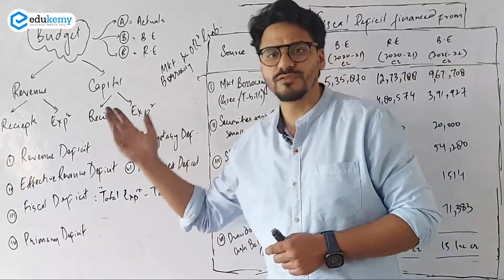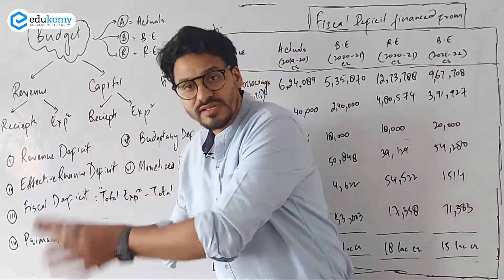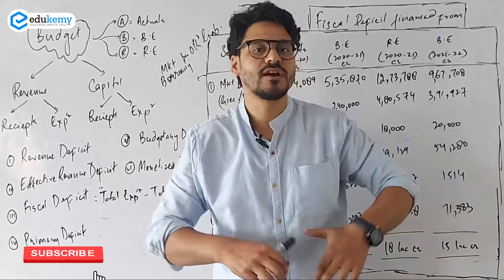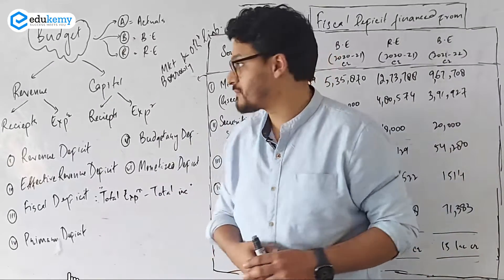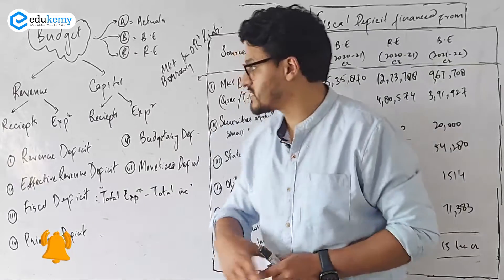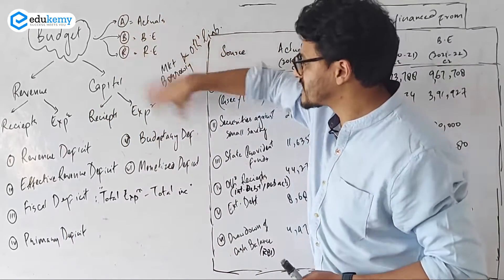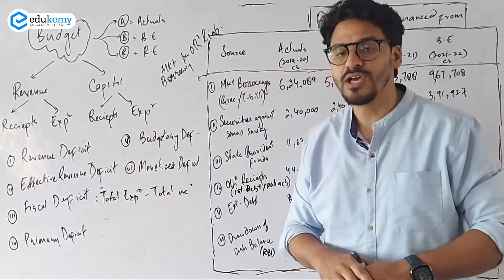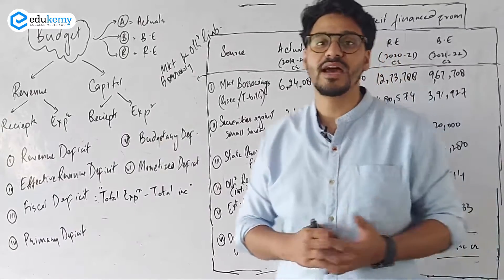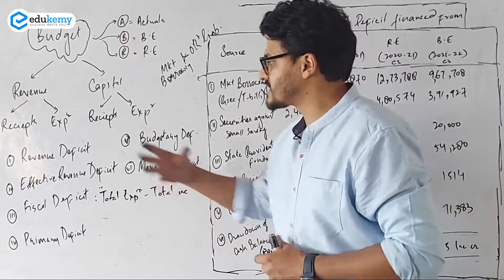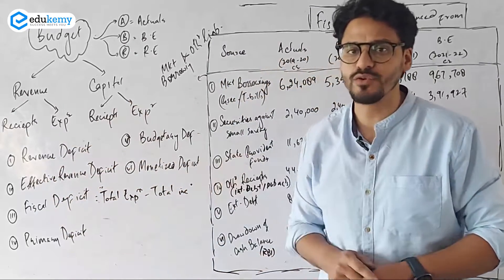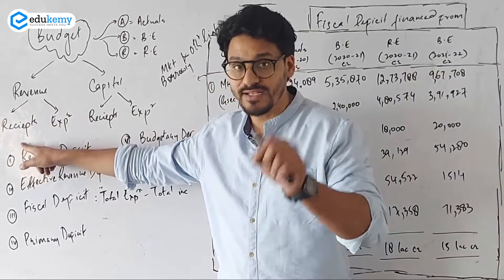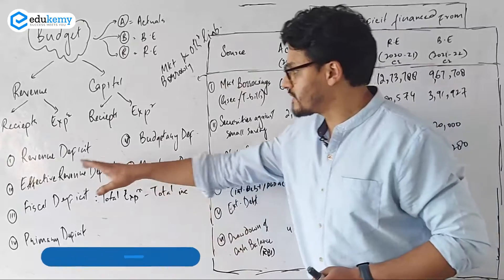In the revenue account there is revenue receipt — that is the money received by the government — and revenue expenditure — the money spent by the government on a day-to-day basis. Then we have capital receipt and capital expenditure — what are the receipts and expenditures in the capital account. From these budget accounts, that is the revenue and capital account, we can get various kinds of deficits. There is a deficit known as revenue deficit, which is the deficit in the revenue account, wherein if the expenditure is more and the receipts are less, then you have a revenue deficit.